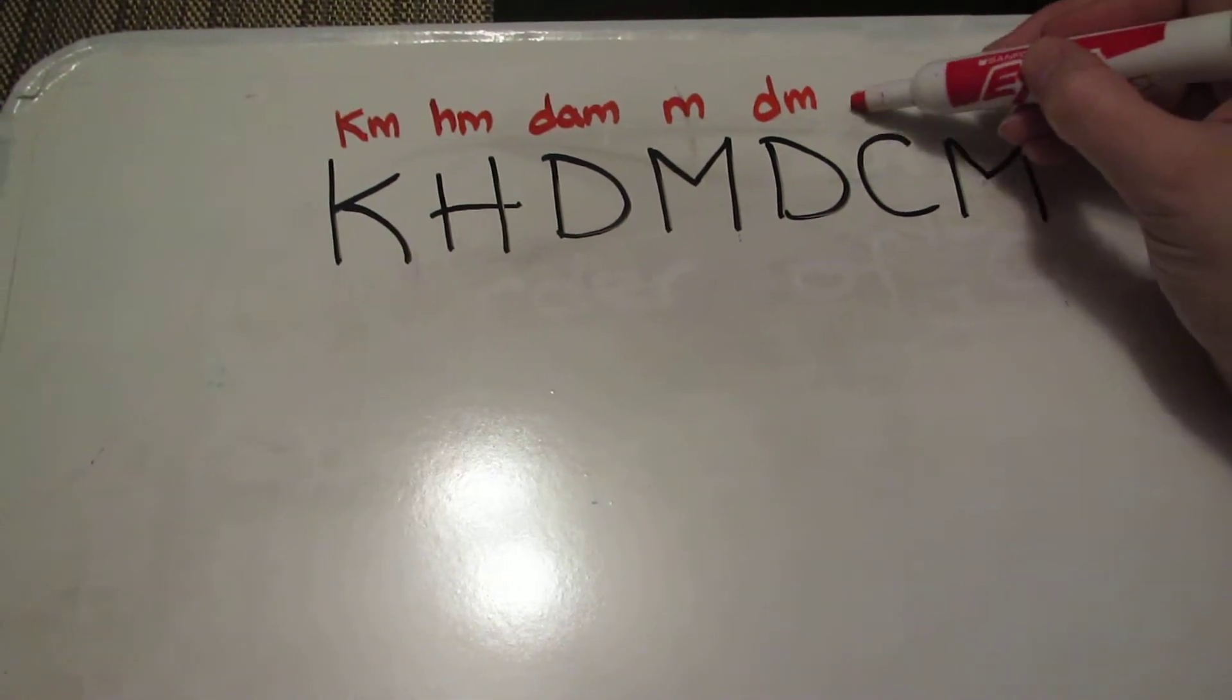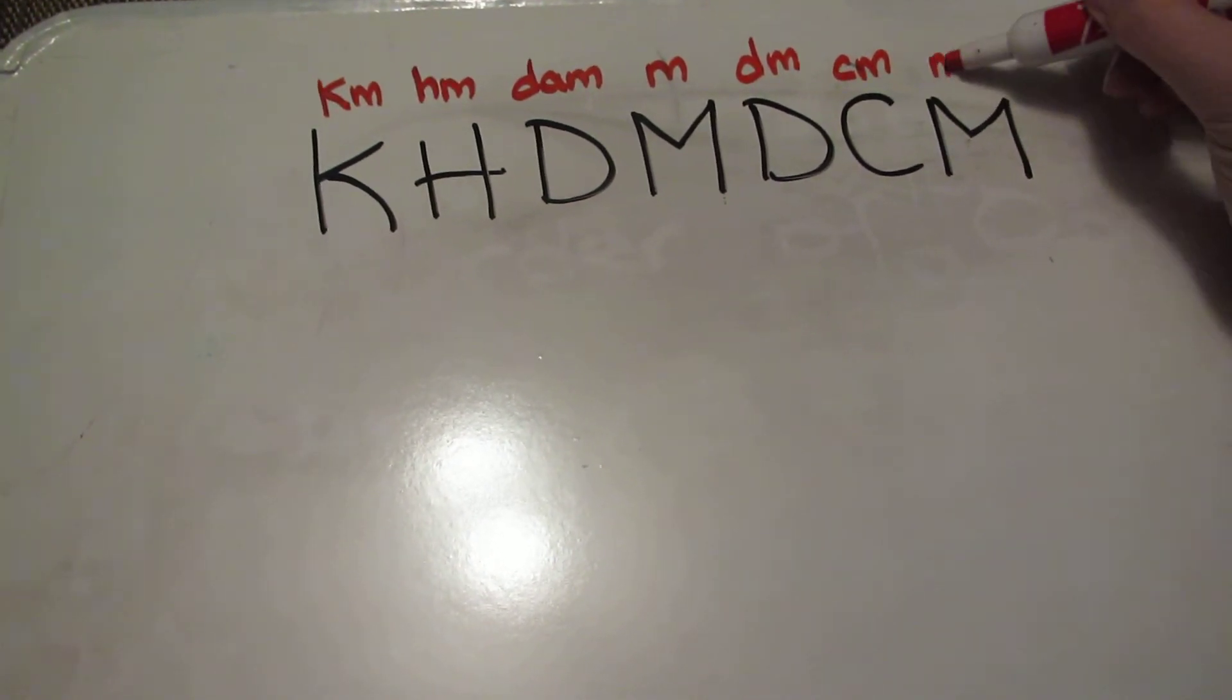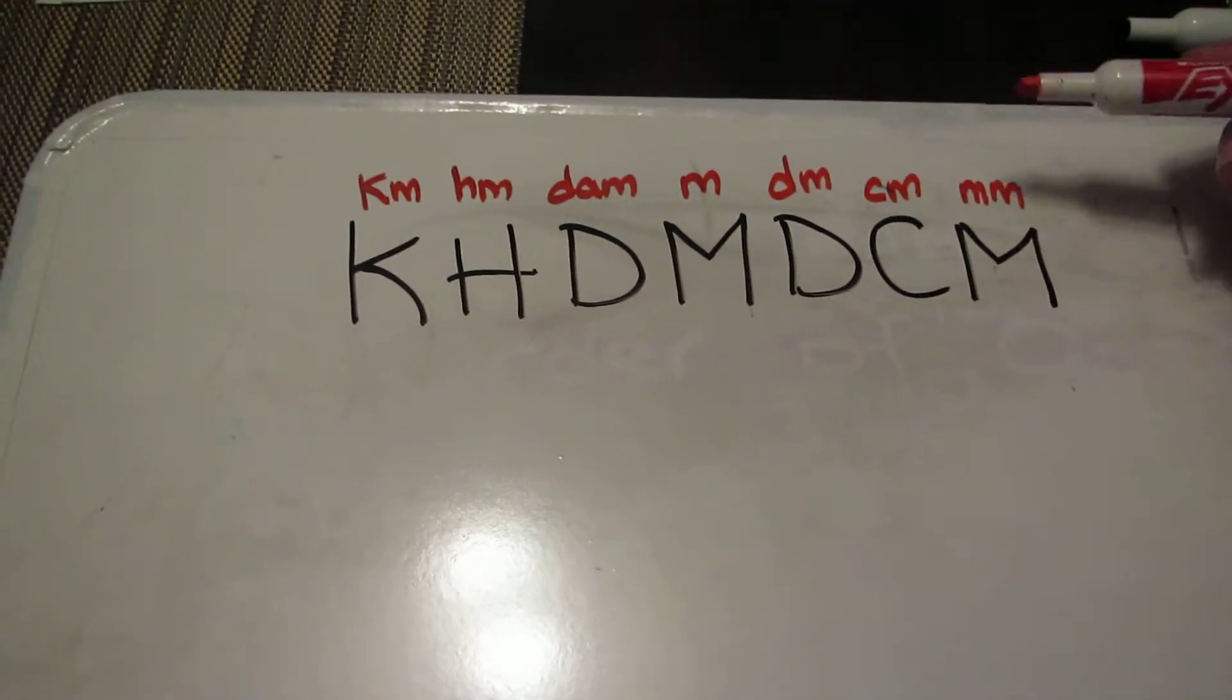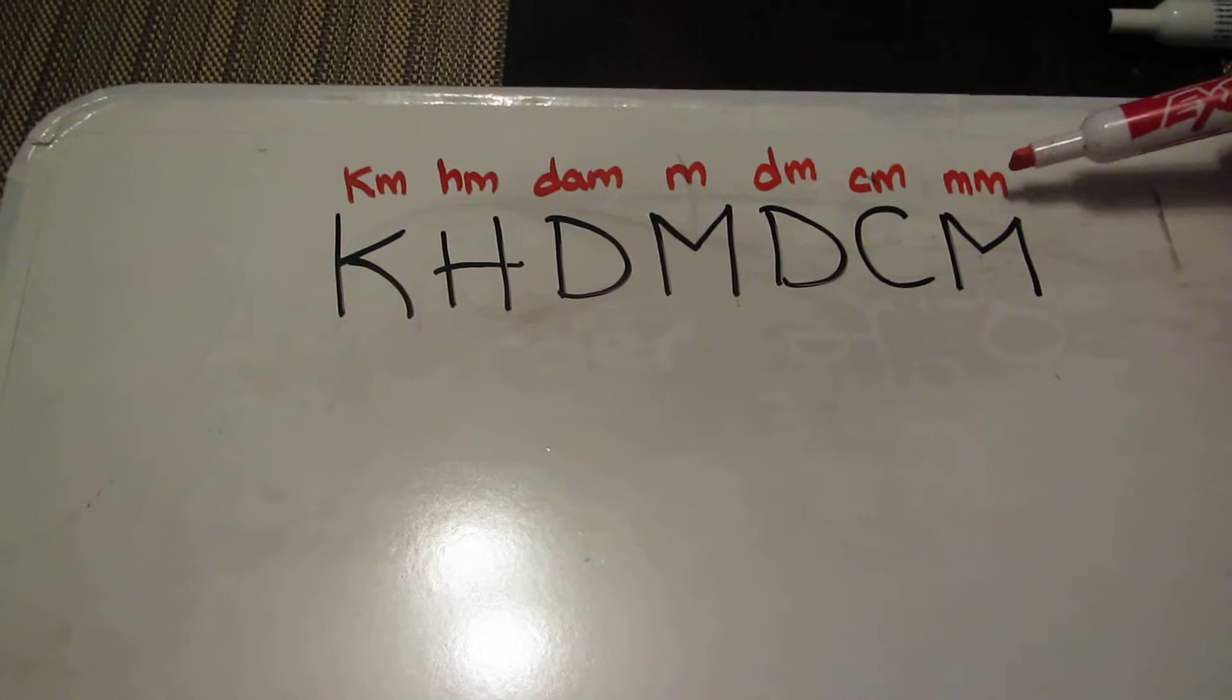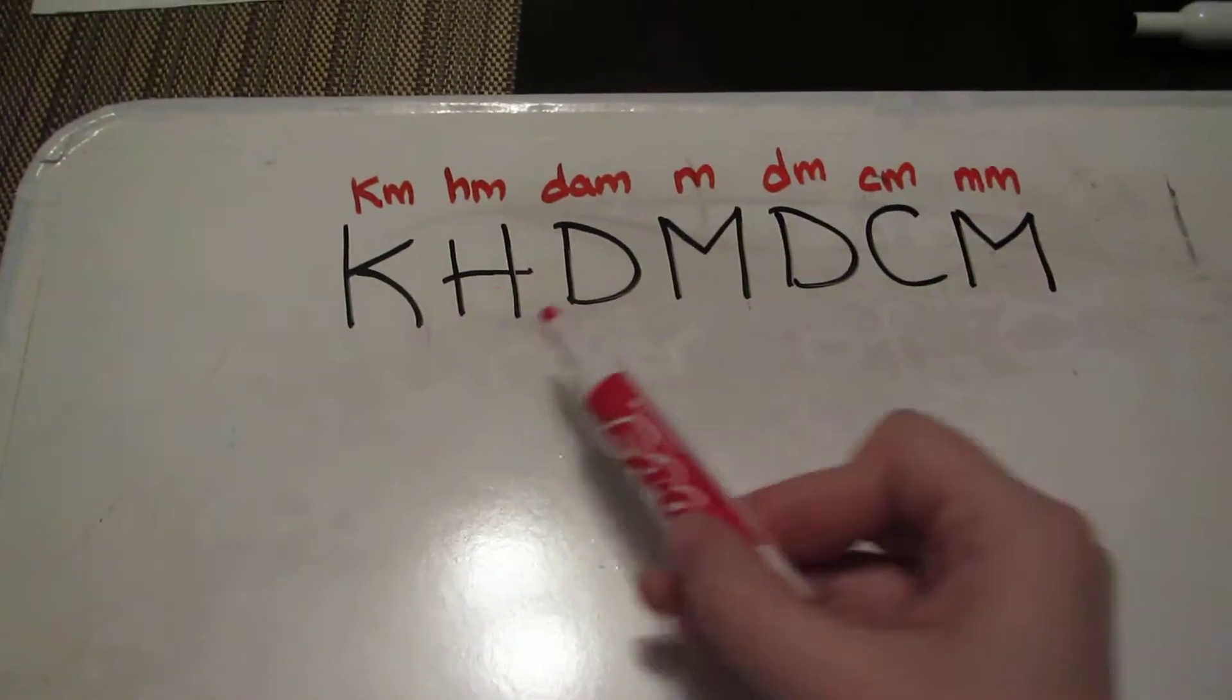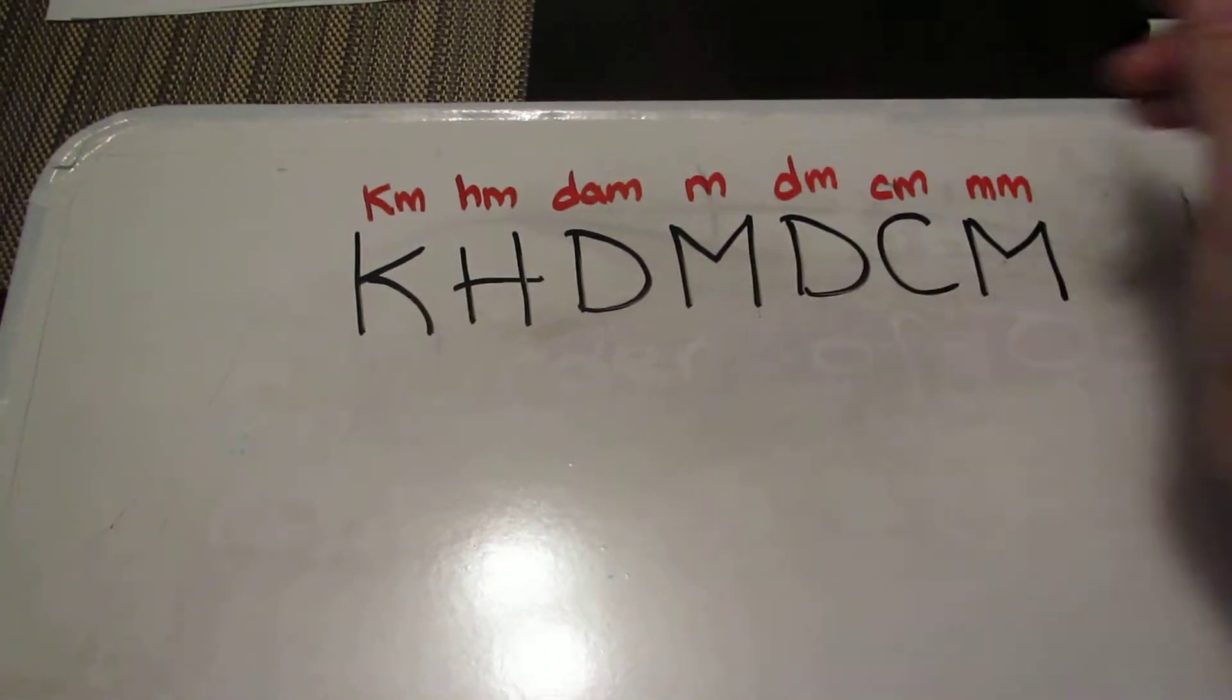C is centimeters and our other M is millimeters. For our purposes in elementary school, we're only working right now with millimeters, centimeters, decimeters, meters, and kilometers, but we need to know that the other two exist because we have to work with them.